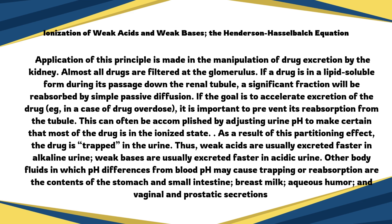If the goal is to accelerate excretion of the drug — for example, in the case of drug overdose — it is important to prevent its reabsorption from the tubule. This can often be accomplished by adjusting urine pH to ensure that most of the drug is in an ionized state. As a result of this partitioning effect, the drug is trapped in the urine. Thus, weak acids are usually excreted faster in alkaline urine; weak bases are usually excreted faster in acidic urine.